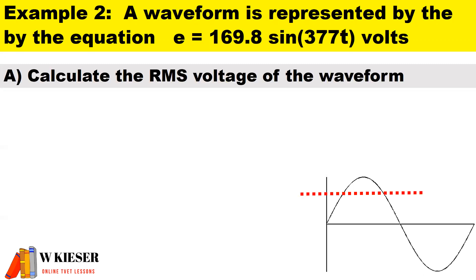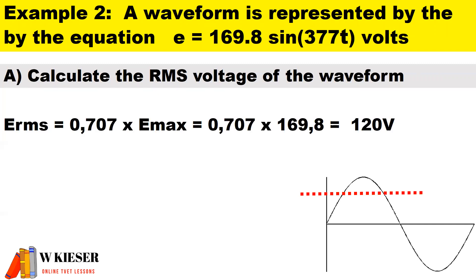In part A of this example calculate the RMS voltage of the waveform. To calculate the RMS value it is 0.707 multiplied by the maximum value and therefore the RMS value is 120 volts.